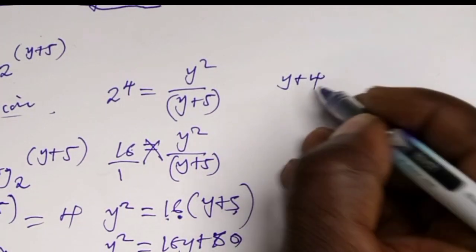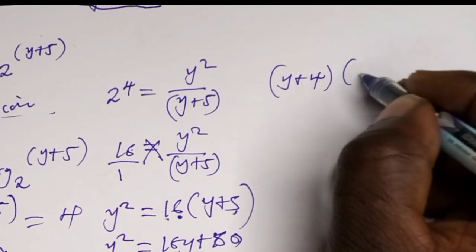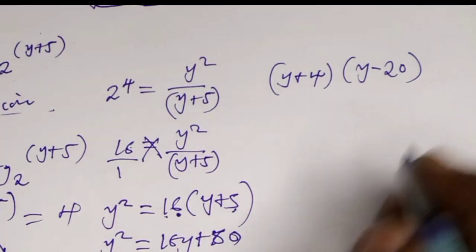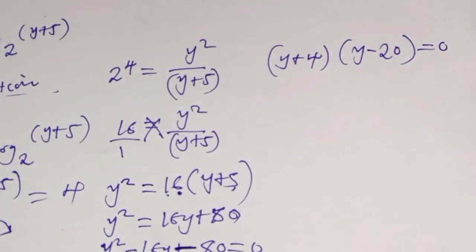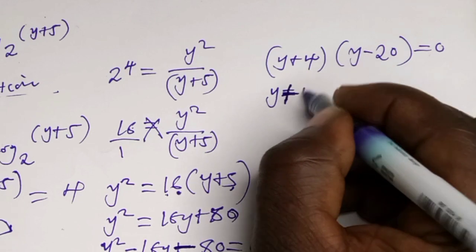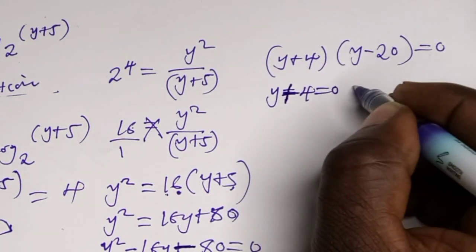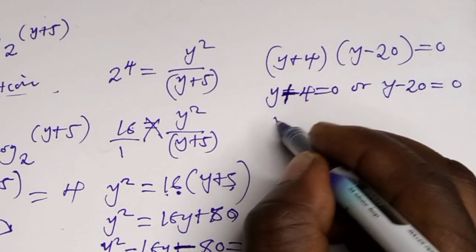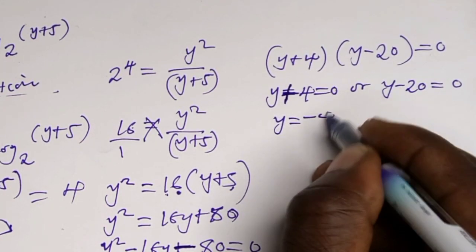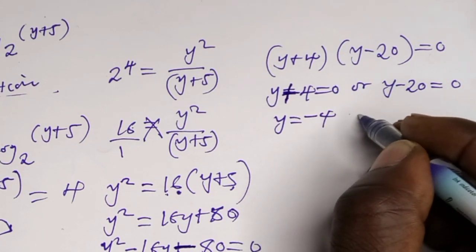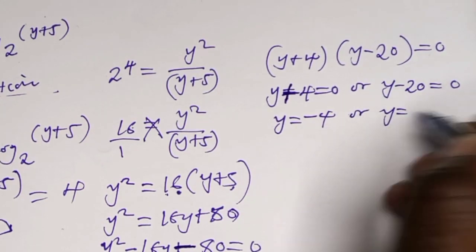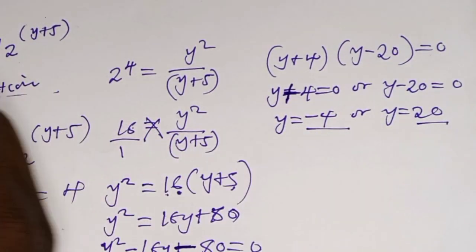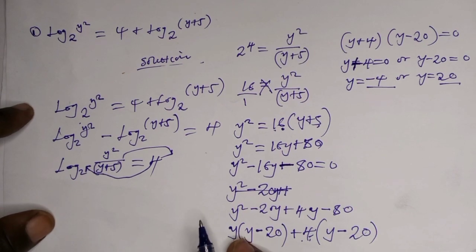So y plus 4 in brackets and y minus 20 which is equal to zero. We solve the equation: y plus 4 equals zero or y minus 20 equals zero, giving y equals negative 4 or y equals positive 20. So these are our solutions for this question. Thank you.